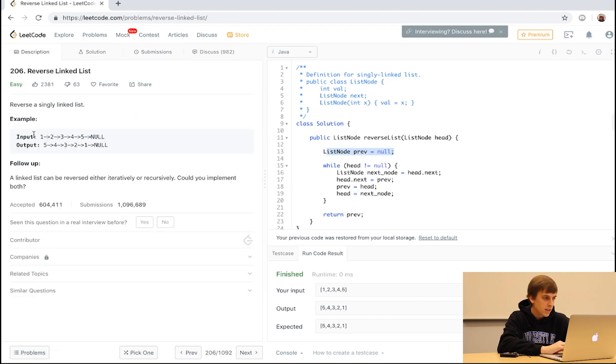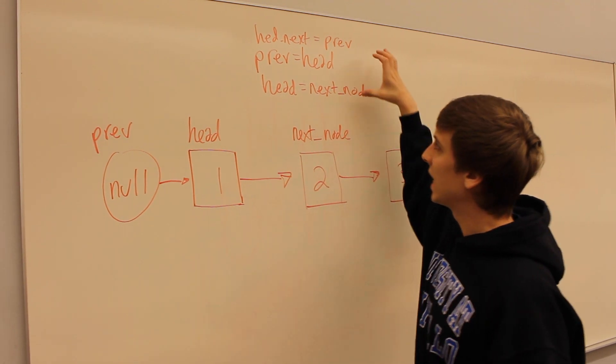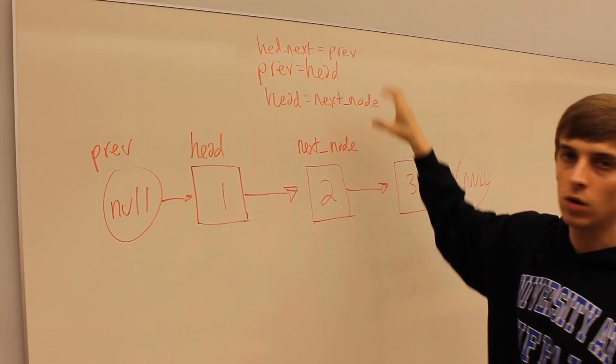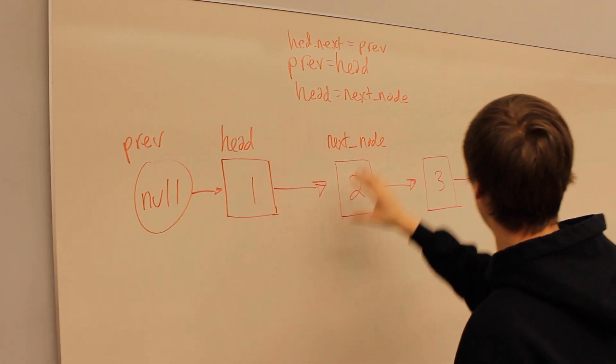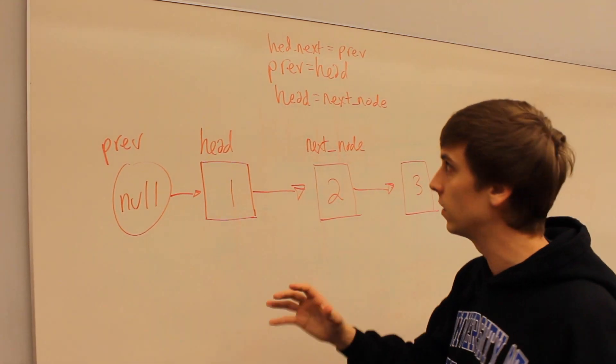Now we have the next node is two. So now we have previous is null, the head is one, the next node is two. We set one.next to null and then we point the previous and head nodes to just loop them along. I think I'm going to have to show this on the whiteboard. This is the main bulk of our code throughout the loop.